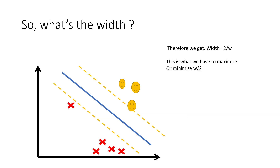Since we have to maximize the margin width (2/||w||), equivalently we can minimize ||w||/2 — maximizing 2/||w|| is the same as minimizing its inverse ||w||/2. So around 80% of the work is done: we know how to get the output, and we know the width is 2/||w|| which we want to maximize. However, we still don't know what w itself depends on. It could be a complex or random function of the input samples, so we need to understand what exactly the width depends upon.